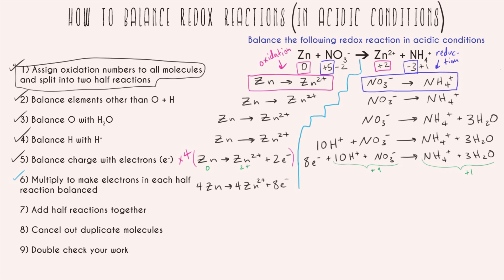And now I'm ready for step seven which is to add the half reactions together. And so all this means is that I'm going to take every single thing that I have on the left hand side and put it together. So my left hand side is going to involve the four zinc, the eight electrons, the 10 H pluses, and the one NO3 minus. And my right hand side is going to involve everything on the right hand side which is my four zinc two pluses, my eight electrons, my NH4 plus, and my three waters.